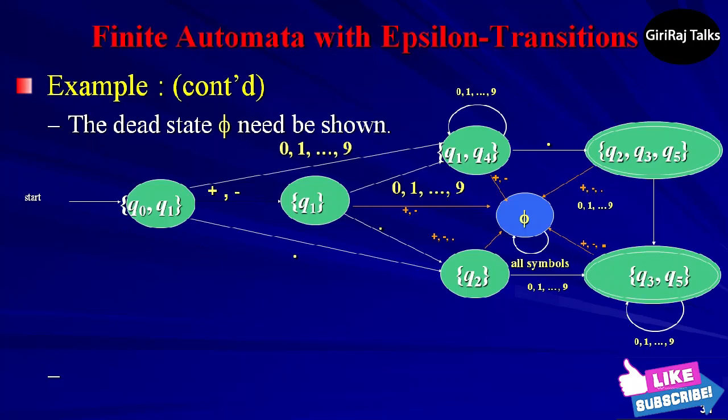Since Q5 is the only accepting state of E, the accepting states of D are those accessible states that contain Q5. We see these two sets {Q3, Q5} and {Q2, Q3, Q5}, indicated by double circles in the diagram.